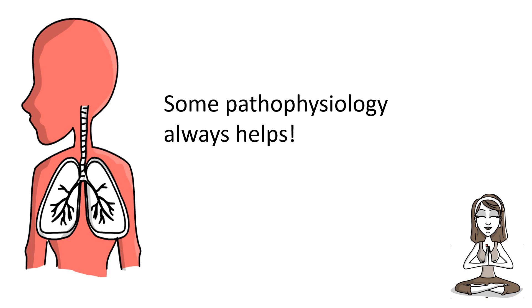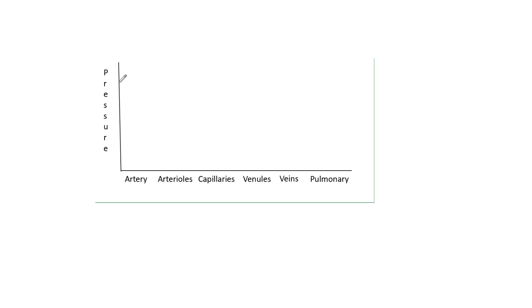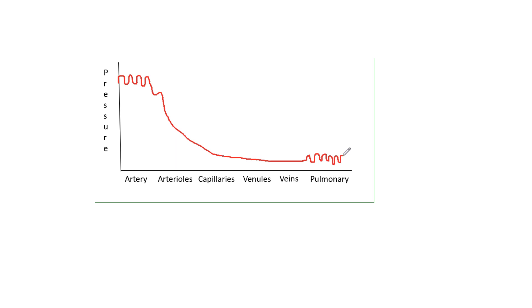Now let's take a deep breath and think about the pathophysiology of pulmonary hypertension. As you can see from this graph, pulmonary circulation is a low resistance and highly compliant system, as opposed to the systemic circulation. With an increase in cardiac output, the lungs are able to recruit partially collapsed or unused vessels, decreasing the pulmonary vascular resistance. There is also a low degree of vascular tone in the proximal pulmonary vascular bed, further decreasing pulmonary vascular resistance.